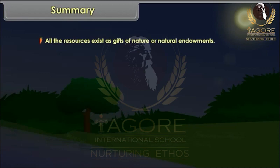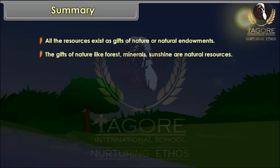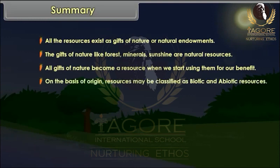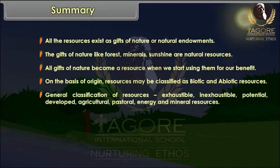Summary: All resources exist as gifts of nature or natural endowments. The gifts of nature like forest, minerals, and sunshine are natural resources. On the basis of origin, resources may be classified as biotic and abiotic. The general classification includes exhaustible, inexhaustible, potential, developed, agricultural, pastoral, energy, and mineral resources.